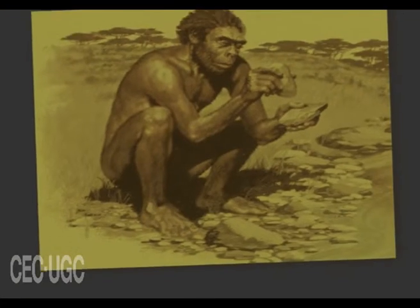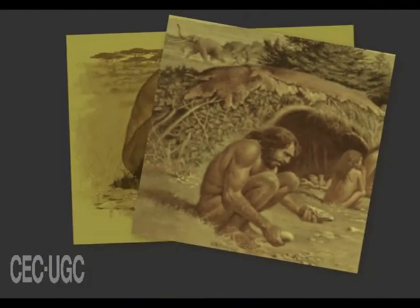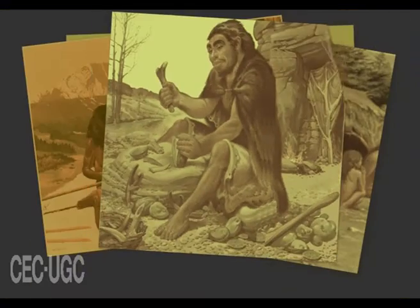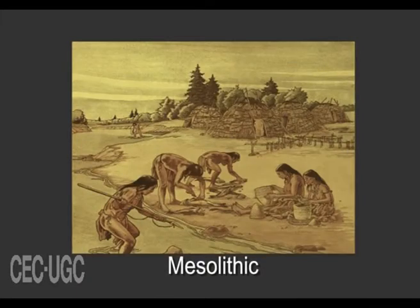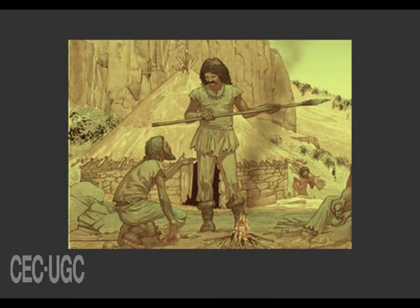Early men employed different types of stone tool-making techniques from the Palaeolithic period and continued till the Chalcolithic period through Mesolithic and Neolithic stages. These various tool-making techniques are broadly grouped into four, and each group has a number of techniques or stages.